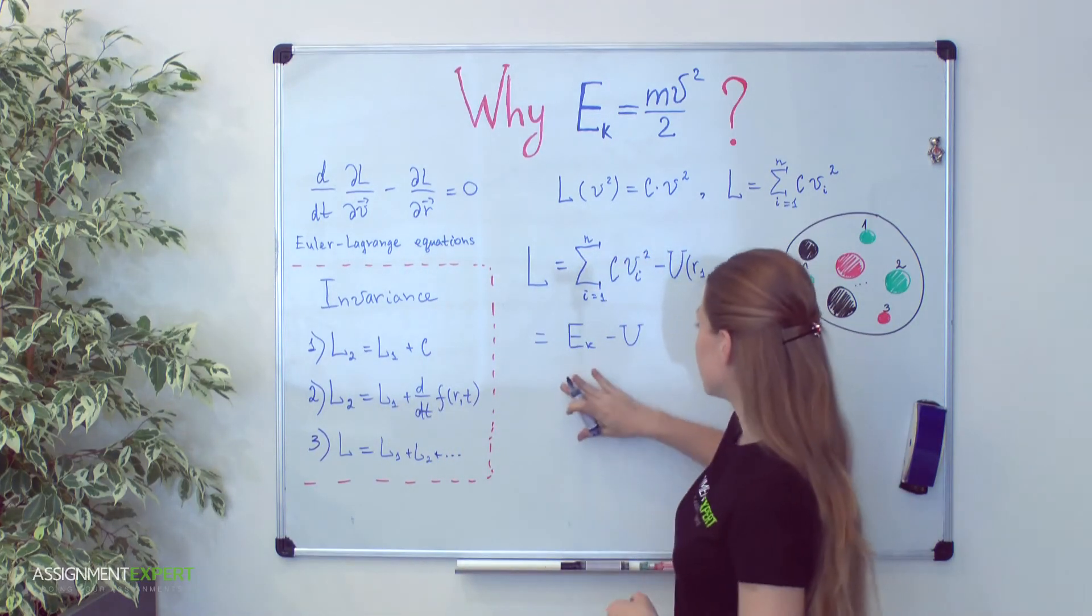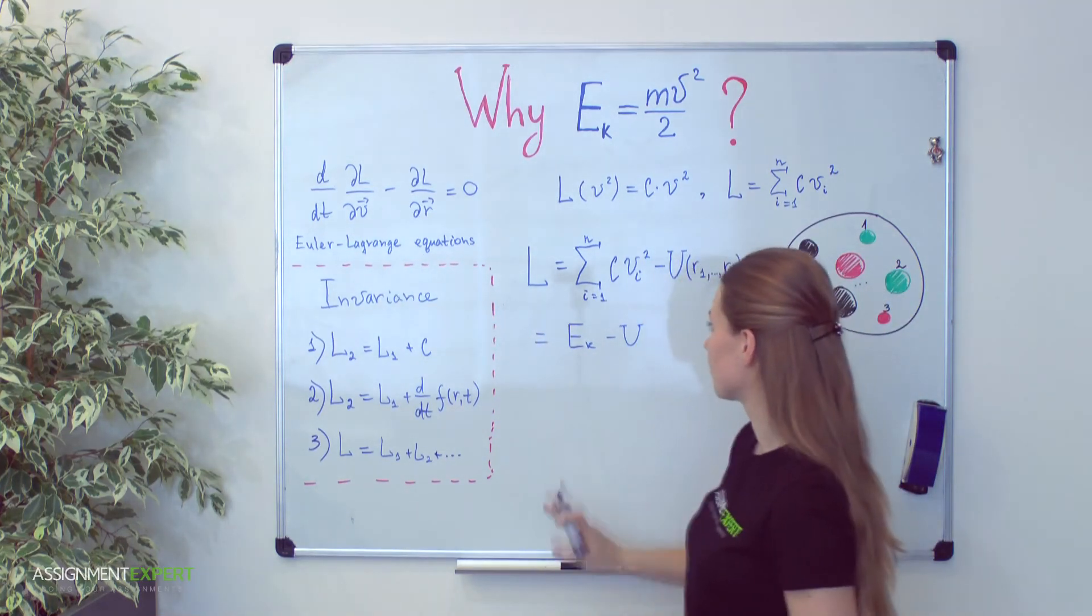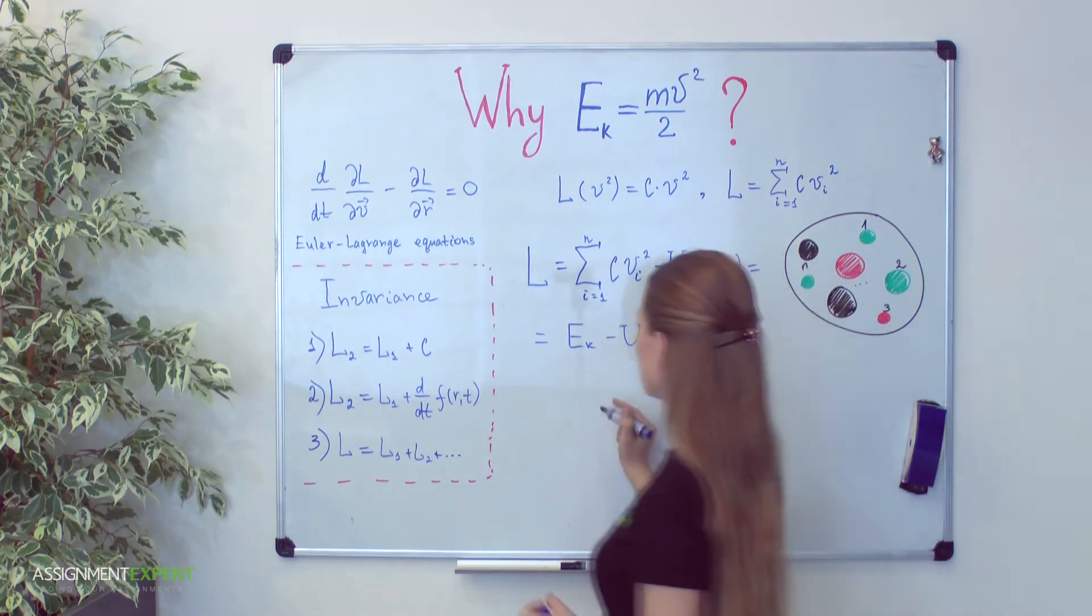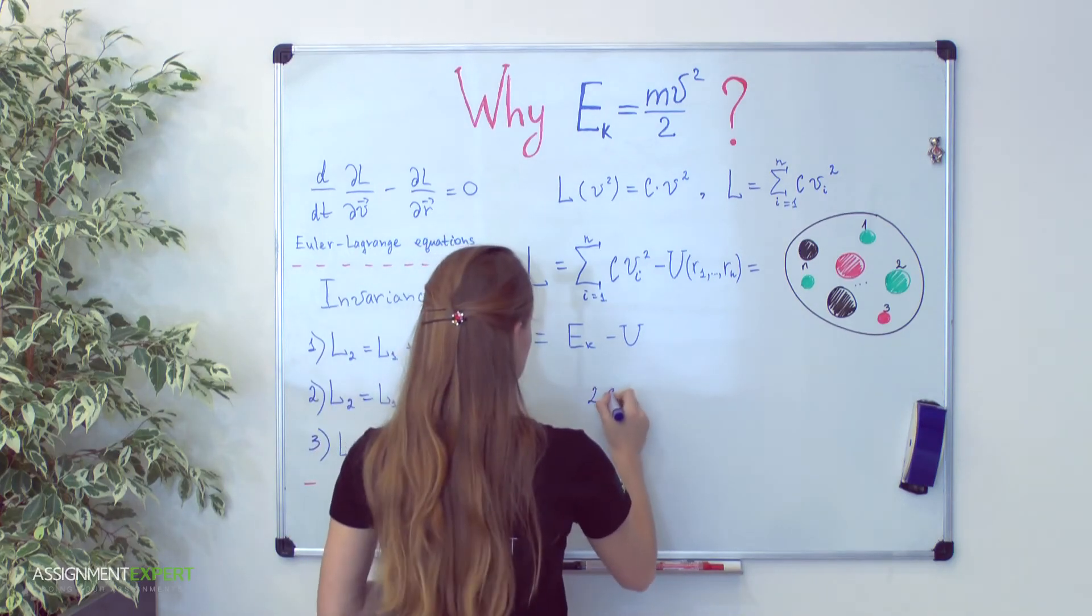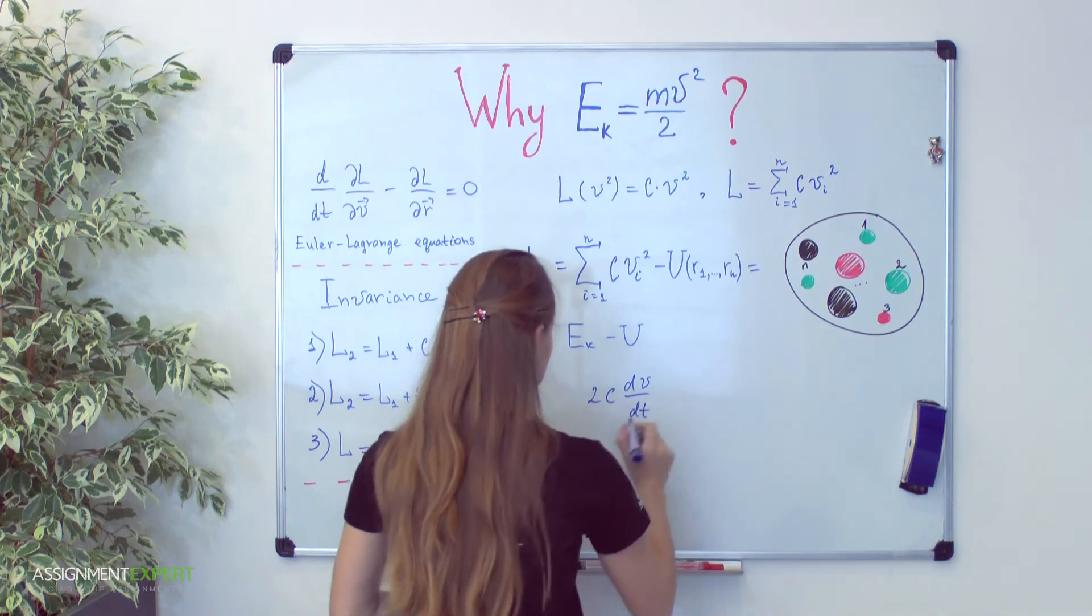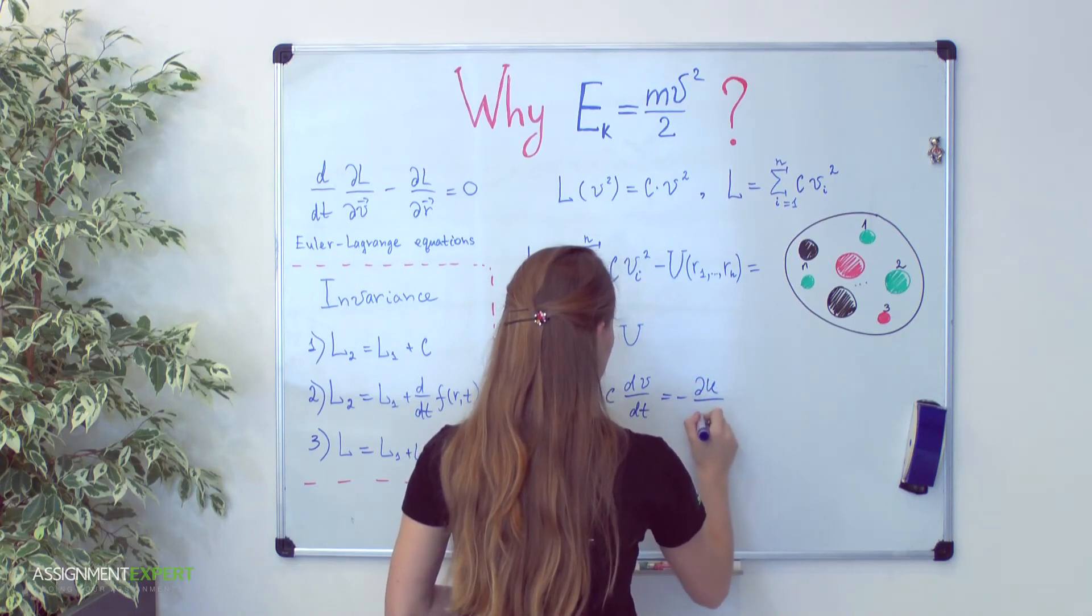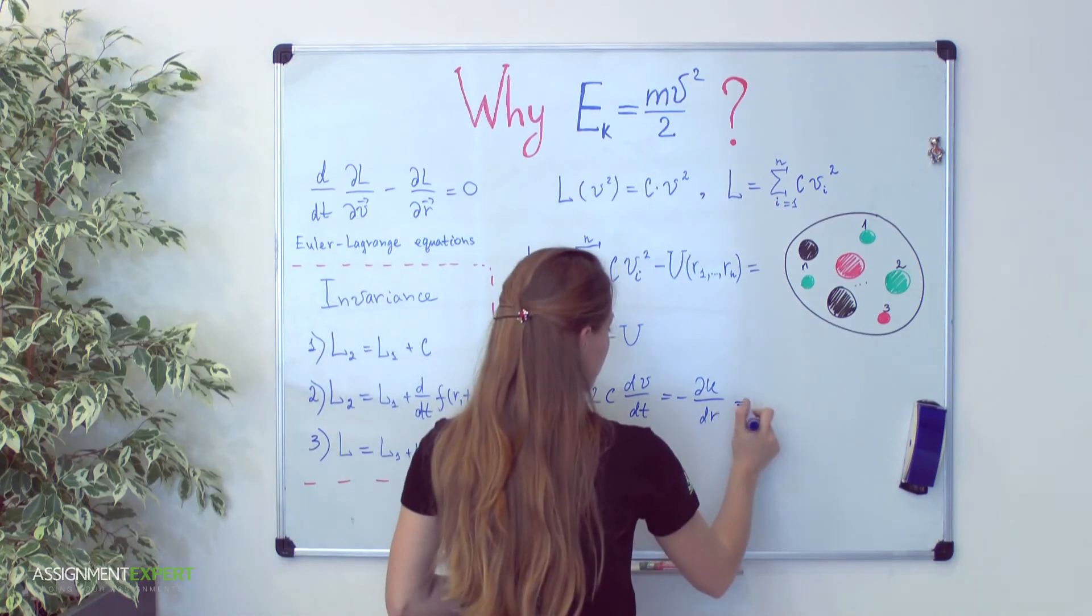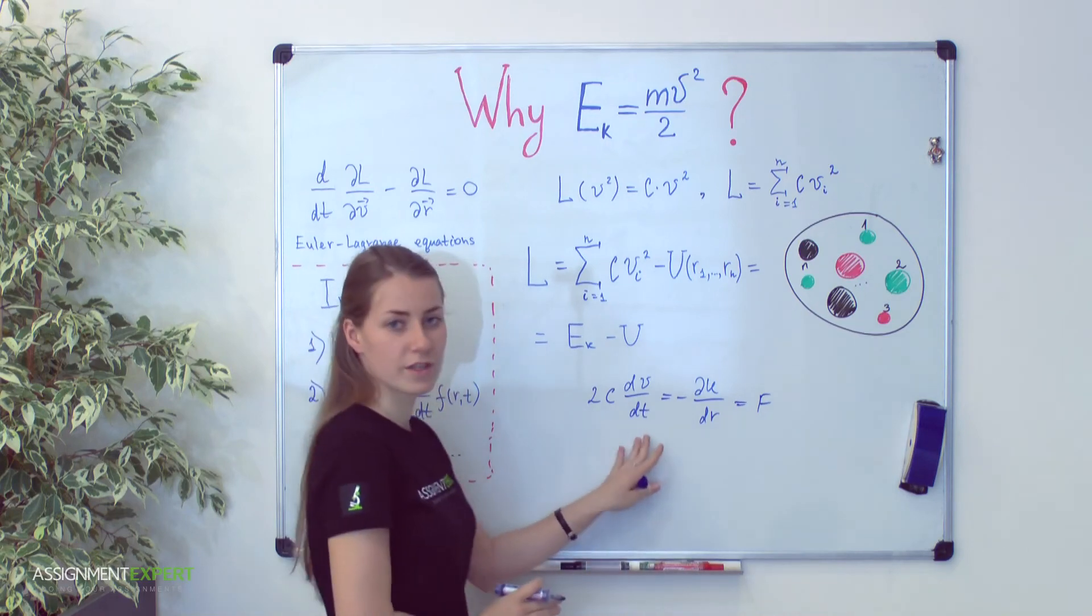Now, let's find a physical sense from here. To do it we can use Euler Lagrange equations. Let us substitute this Lagrange function into it. If you do this, we have from the first term 2c derivative of velocity over time. And the right part of equation is derivative of u function over coordinate. You see that it is nothing but potential force F. This structure is very similar to the second Newton's law.